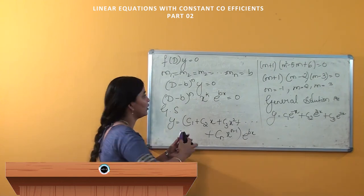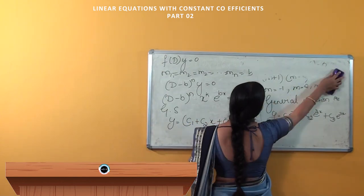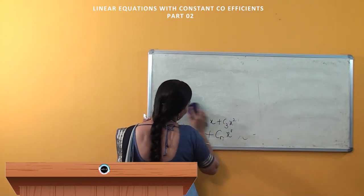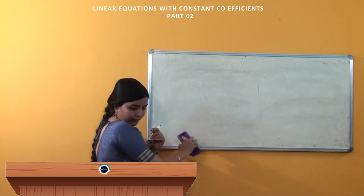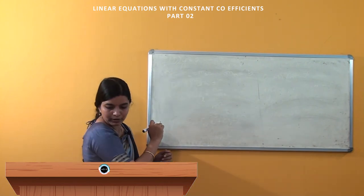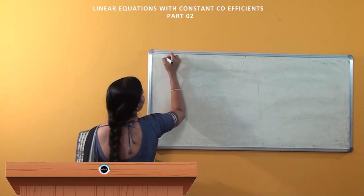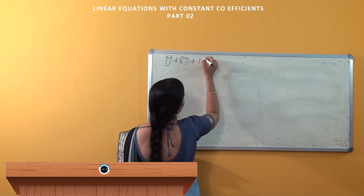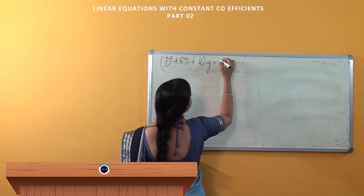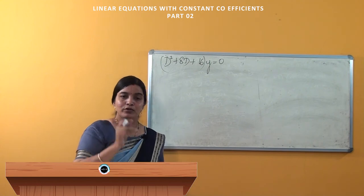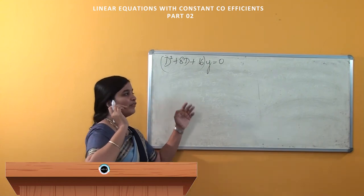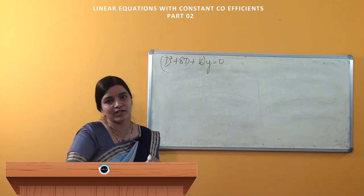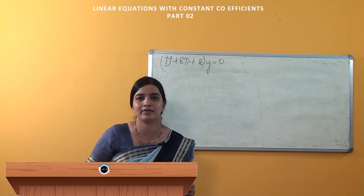We will solve (D² + 8D + 16)y = 0, and find whether it has repeated roots and, if yes, how to write the general solution. We will see this in our next class. Thank you.